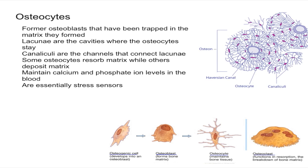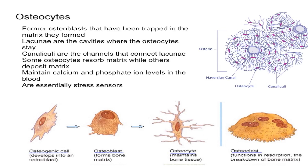As you can see from this diagram, osteogenic cells turn into osteoblasts, and then when the osteoblasts create matrix they turn into osteocytes. The definition of osteocytes is that they are former osteoblasts that have been trapped in the matrix they formed.